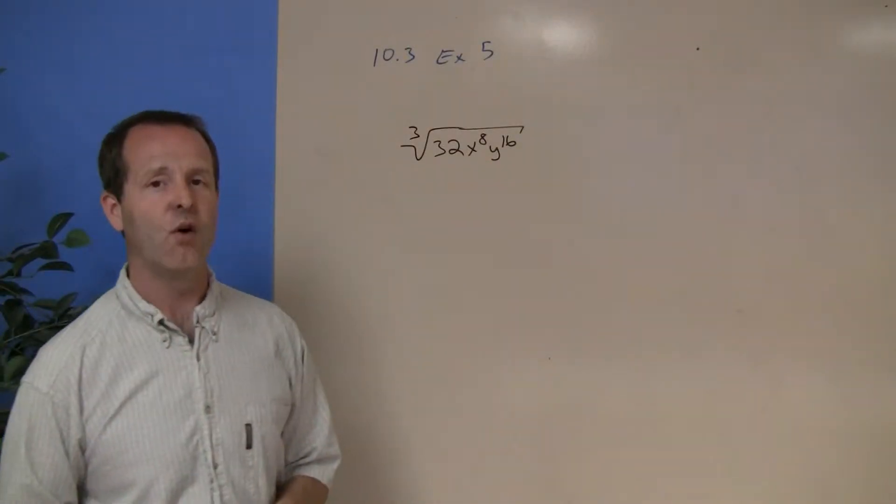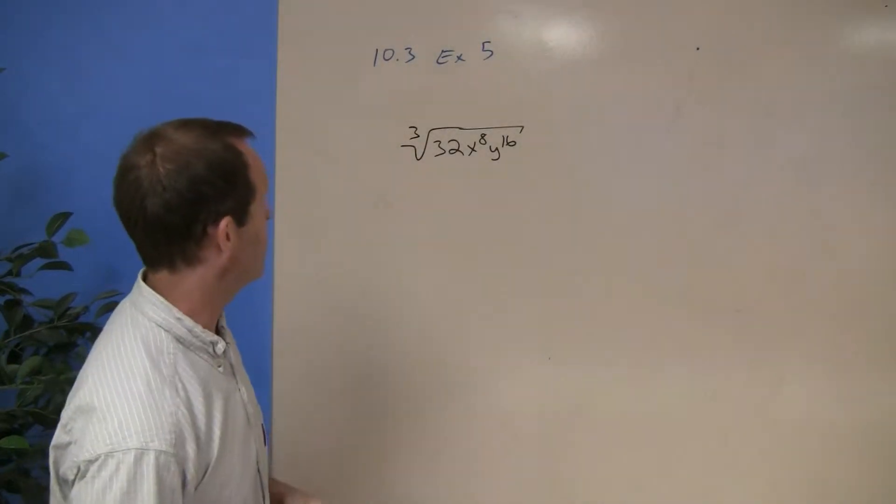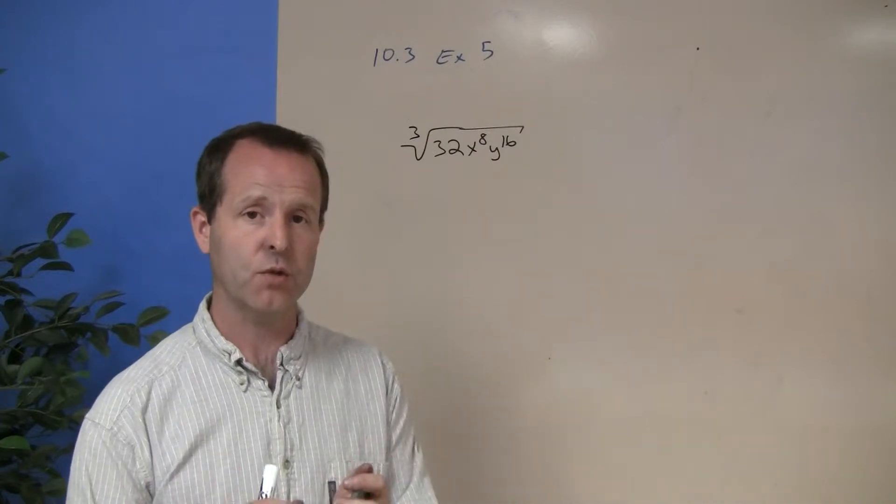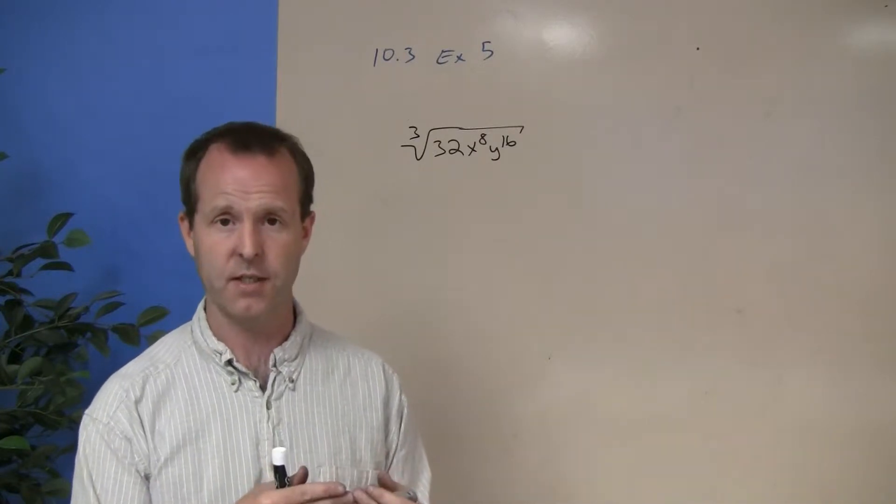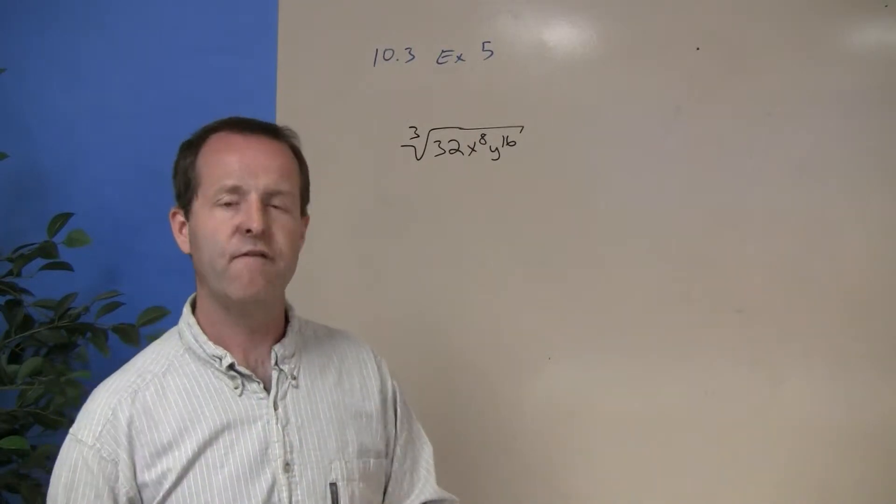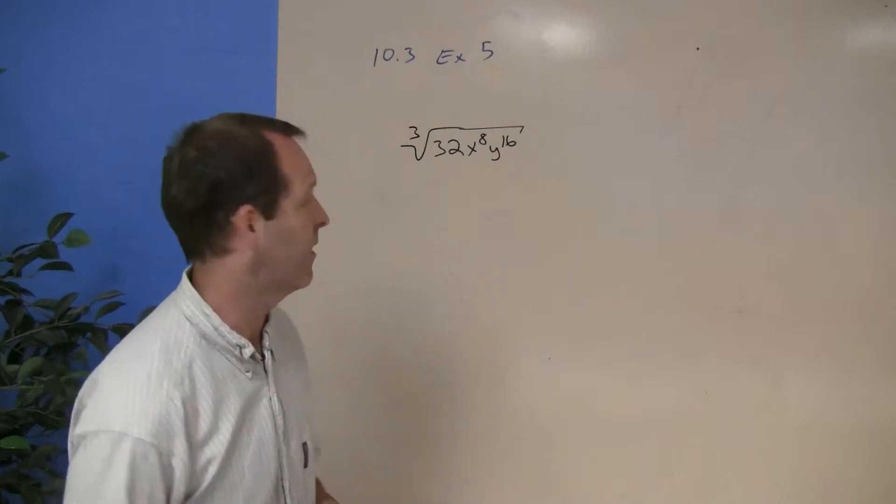We have a cube root of a whole bunch of stuff. The cube root of 32x to the 8th y to the 16th. So I'm going to look at each of the individual terms: the constant, which is 32, the x variables, and the y variables, and start to factor them down so that perfect cubes can be extracted out of them.